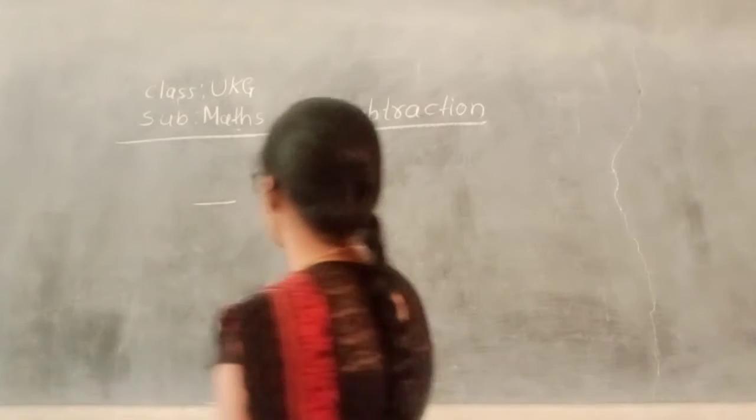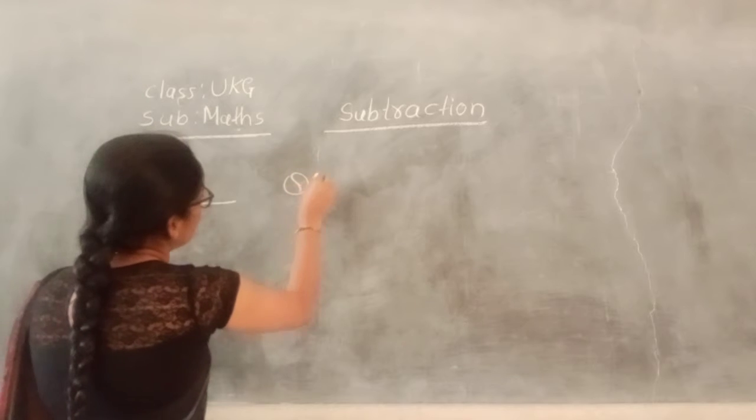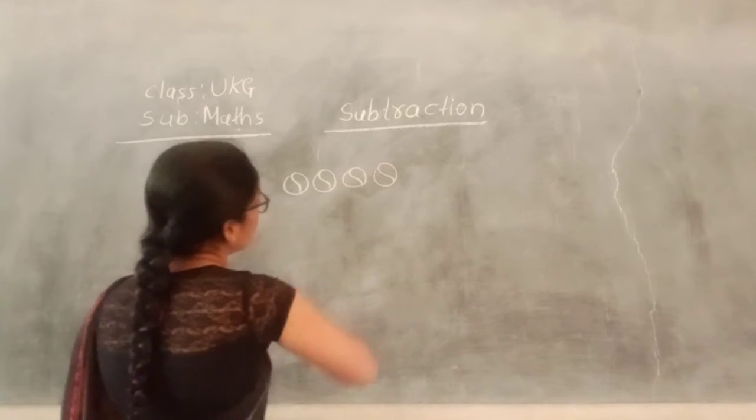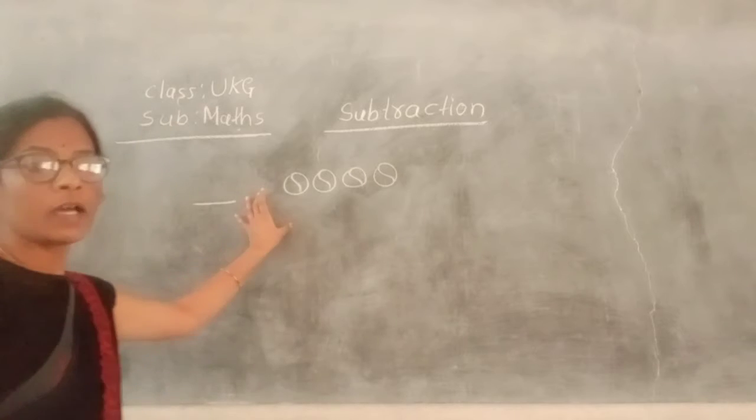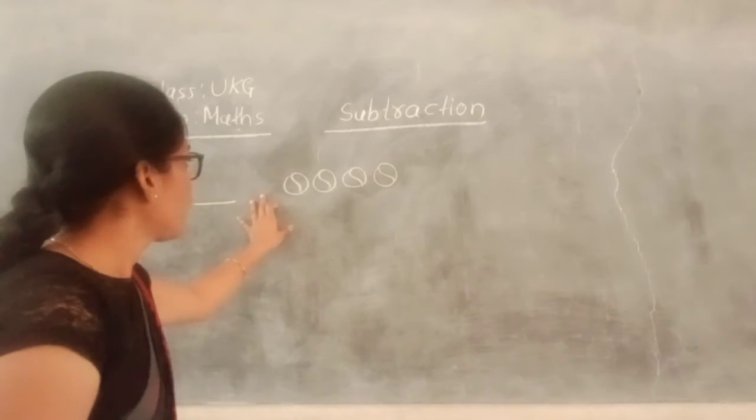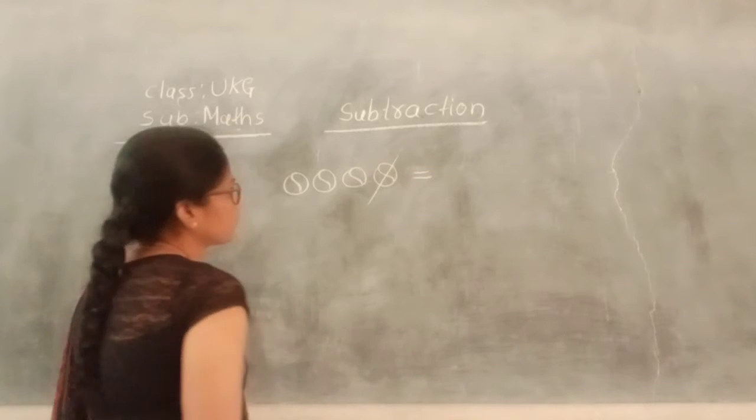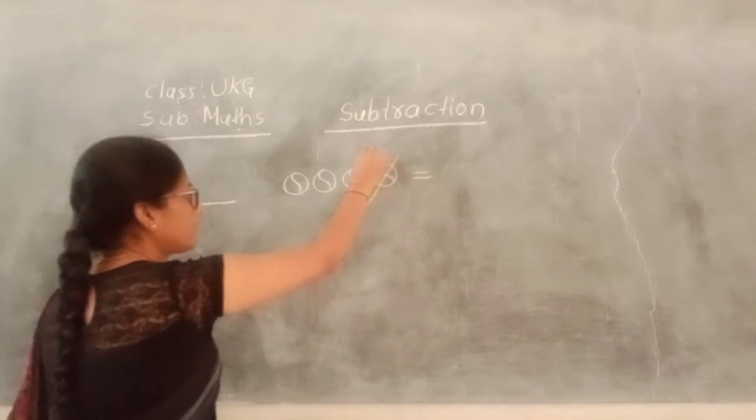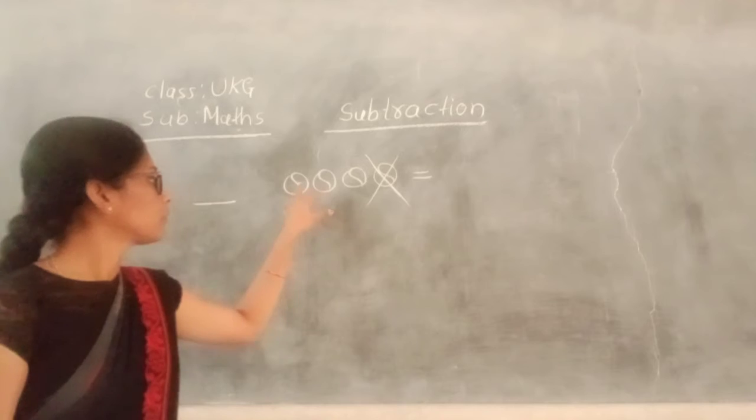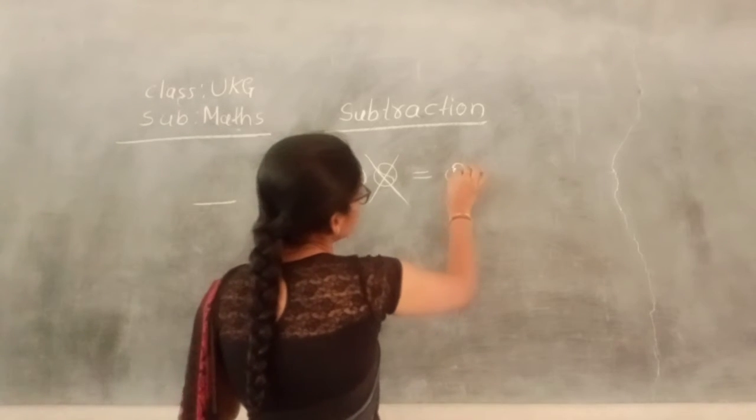This is the method of subtraction. Now we have to write here. One, two, three, four. These are the four circles. Okay, I have crossed one circle here. Next, crossed one. Remaining how many circles here? One, two, three. I have three circles here.